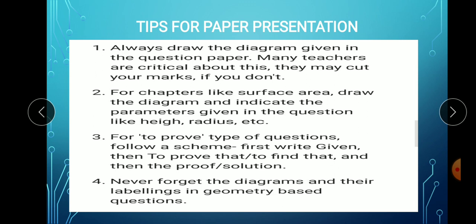For proof type questions, follow the schemes. First write 'Given' - whenever proof type questions are there, that proof we are writing in three parts. One part is 'Given' which we picked up from the question only. Then 'To Prove' - again this is given in the question only. And 'Proof' - based on these two, what is required we are just writing the statements with the reasons. So likewise in three parts we are dividing that proof. Never forget the diagram and their labellings in geometry based questions.